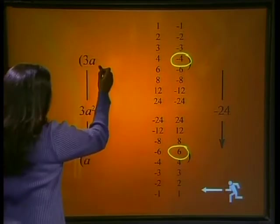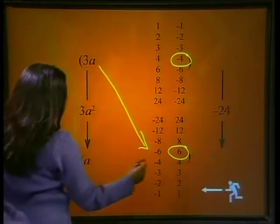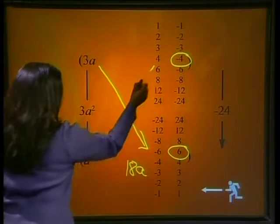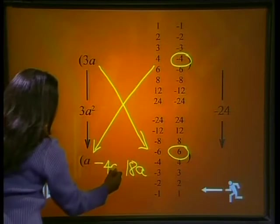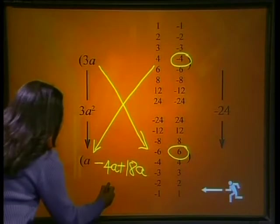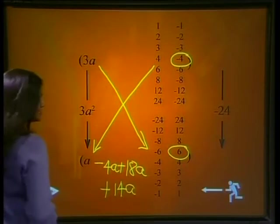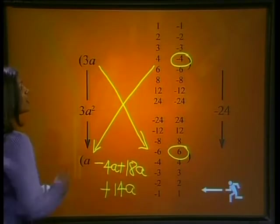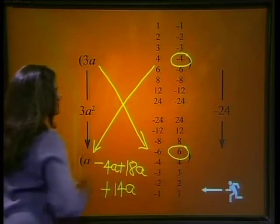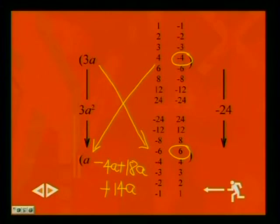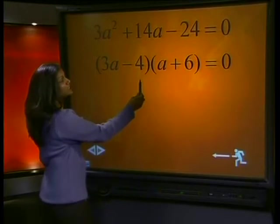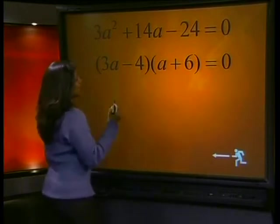Let's multiply out and check. 3a × 6 gives me 18a. -4 × a gives me -4a. -4a + 18a gives me positive 14a, which is the middle term. So our correct factors are 3a - 4 and a + 6. So, our correct factors are (3a - 4)(a + 6). And we can solve this.